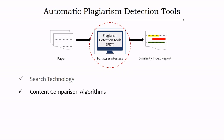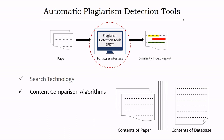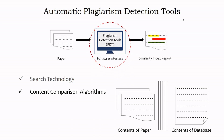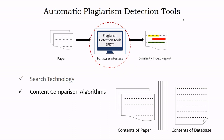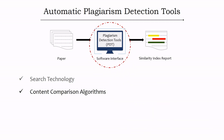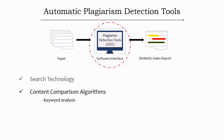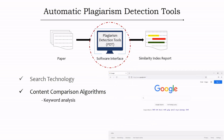The second method is content comparison algorithms. The associated algorithm in the plagiarism detection tool matches the contents of the paper with the database to find similarity. Different tools use different algorithms. The first aspect under this is keyword analysis — the tool searches the database for keywords associated with your paper, similar to how a search engine scans for a term.